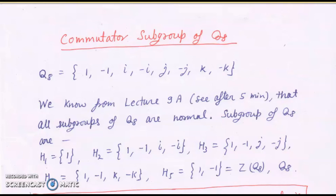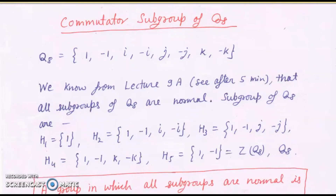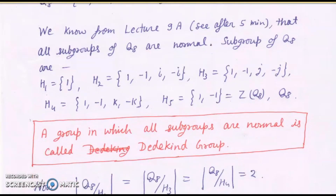Now we determine the commutator subgroup of Q8 = {1, -1, i, -i, j, -j, k, -k}. All subgroups of Q8 are normal. The subgroups are: H1 = {1}, H2 = {1,-1,i,-i}, H3 = {1,-1,j,-j}, H4 = {1,-1,k,-k}, H5 = {1,-1} (the center of Q8), and Q8 itself. A group in which all subgroups are normal is called a Dedekind group, so Q8 is an example of a Dedekind group.